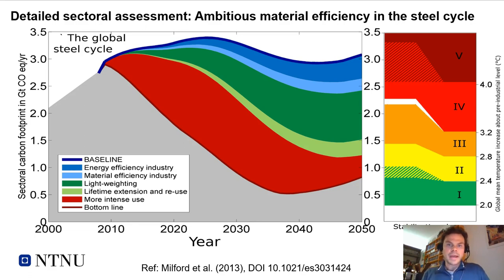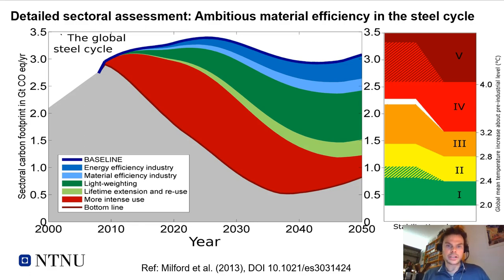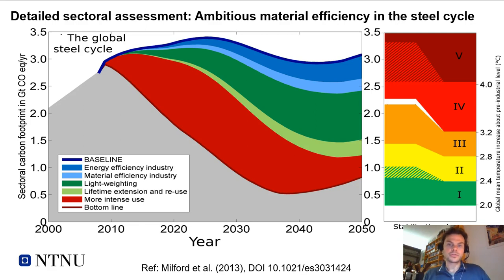Material flow analysis can be used to extrapolate current material use into the future and link it to energy consumption and emissions. For example, we can extrapolate the current steel cycle to the year 2050, starting with stocks of steel as service providers, then calculating how much primary production is needed to maintain and expand steel stocks and how much secondary production or steel recycling can be done based on available scrap. We can then estimate energy consumption and link it to emission savings from energy efficiency or material efficiency through lifetime extension or improved recycling.